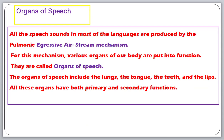All the speech sounds in most languages are produced by the pulmonic egressive air stream mechanism. In simple terms: pulmonic refers to the lungs, egressive refers to pushing out the air, and air stream mechanism refers to the air which we receive and express.